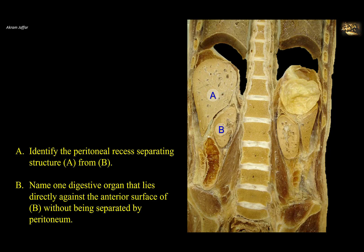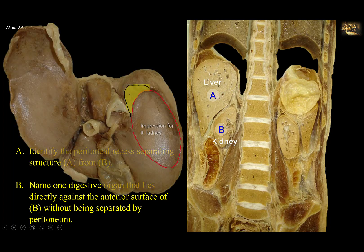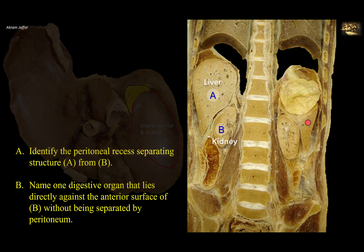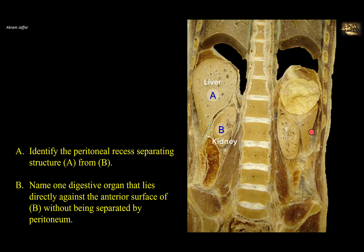This is a coronal section of the abdomen, showing the right lobe of the liver, and posterior inferior to it is the kidney, which is related to the visceral surface of the liver. Note that the left kidney is related partly to the spleen here on the left, and this is the stomach.